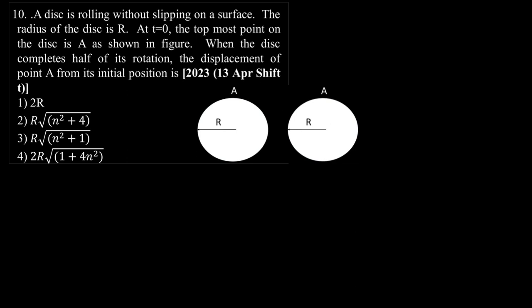What we see is the body A is rotating. The circle is rotating like this. And slowly what we see is it reaches the diametrically opposite position by completing half of its rotation, not one rotation, but completing half of its rotation.